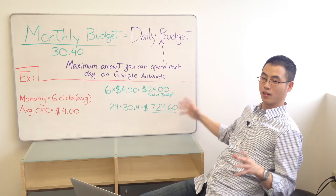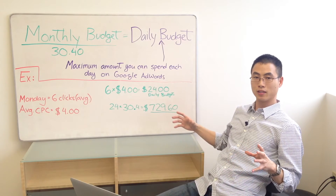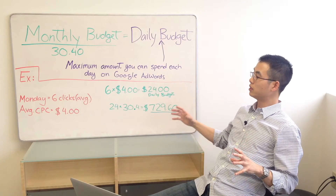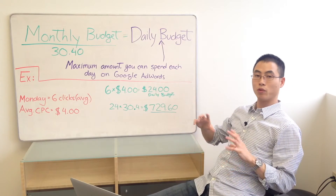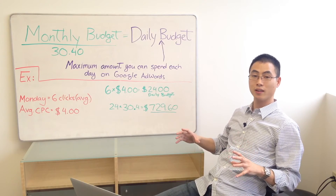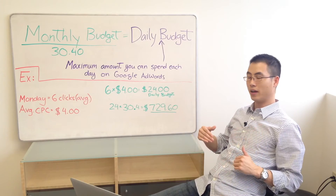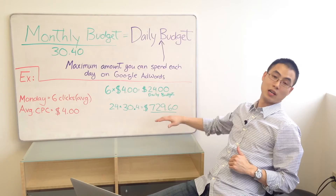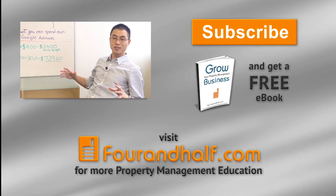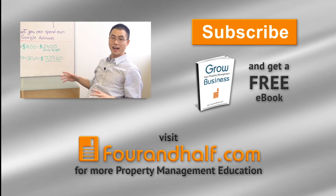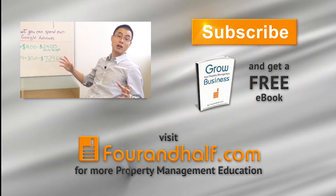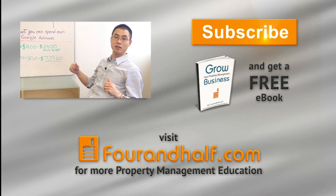So hopefully that gives you an idea of how to set your budget to start off. This is an estimate — once you run it for a month, that's usually good enough to determine a trend and a baseline, and you can always adjust your budget from there. But this is a great way to start. If you have any questions, or negative keywords and writing your ad copy all seem kind of confusing, we're here to help — feel free to give us a call.